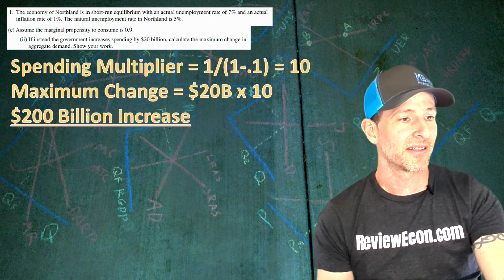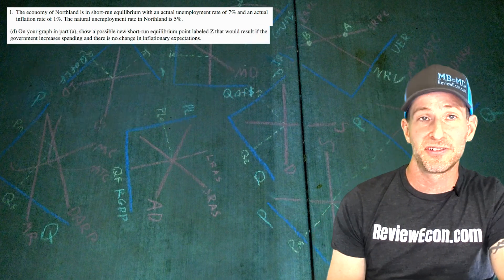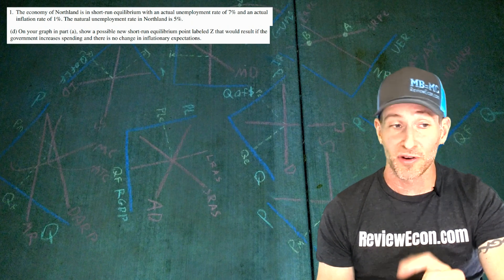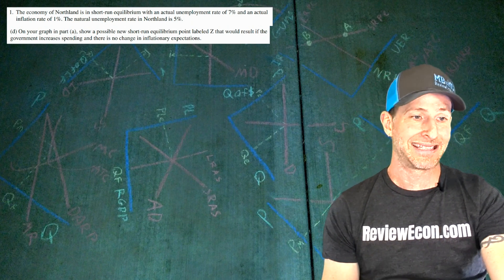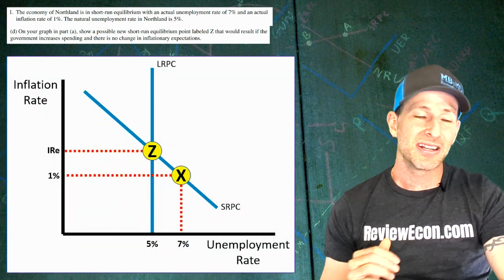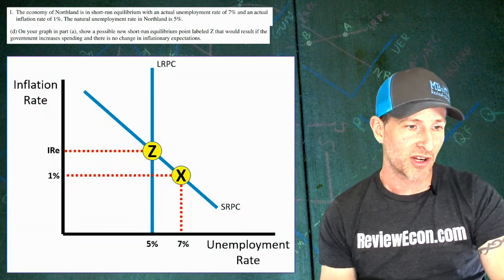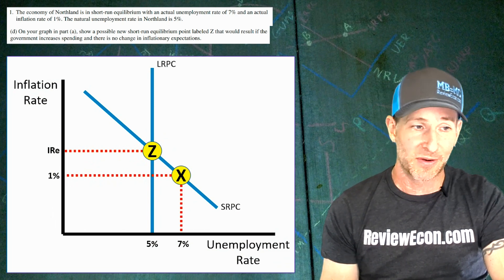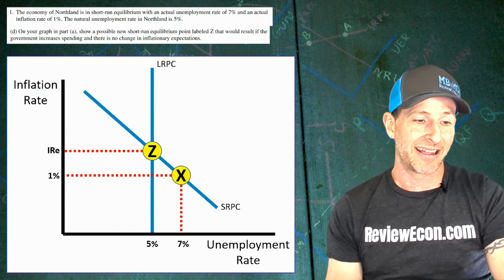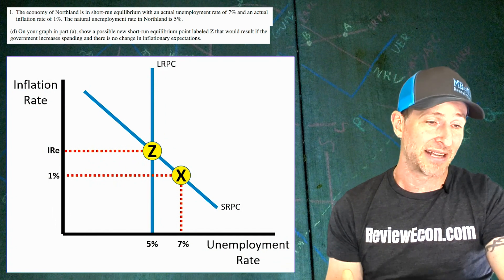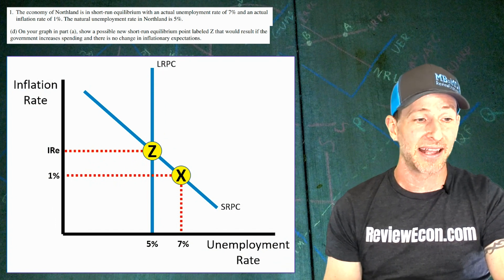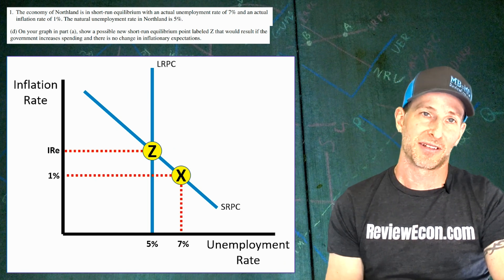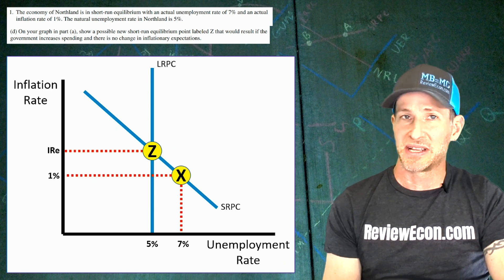Part D: on the same Phillips curve graph drawn earlier, we show a possible short-run equilibrium with point Z. As long as the point is higher up on the short-run Phillips curve to the left, that will be fine. I went ahead and shifted to long-run equilibrium, so point Z is at the natural rate and at the expected inflation rate.